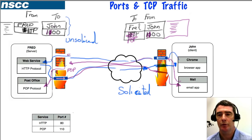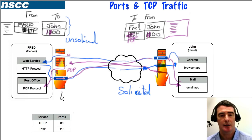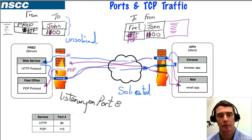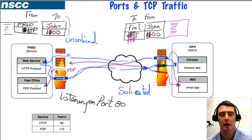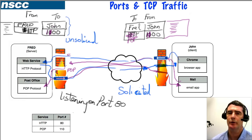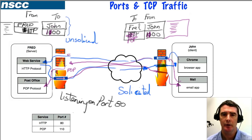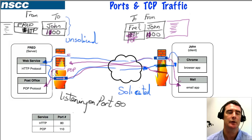Because these two ports are open on Fred's side, we say the web service is listening on port 80, and you'll hear the term 'listening on the HTTP port.' Fred's firewall has two open ports, and there are two services listening on those ports: the web service listening on port 80, and the post office listening on port 110, the POP port. That's how ports and TCP addresses are used together to send information from applications through the internet to another computer, to a service, and then back again.